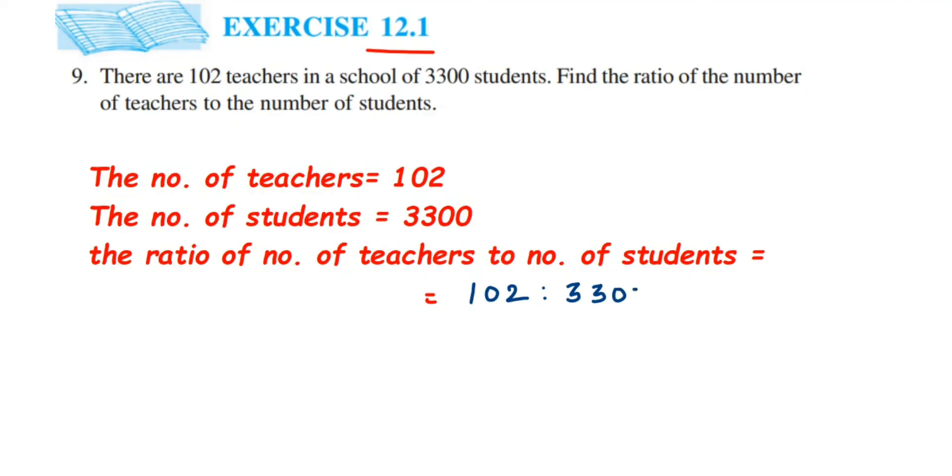Now this is not in reduced form. So we have to cancel this. For that, I'm going to convert this into fraction. So this is 102 and 3300.